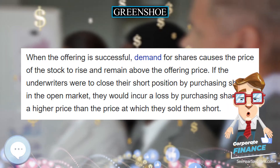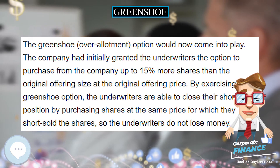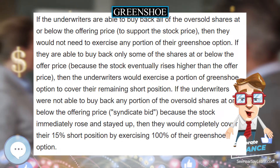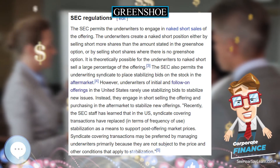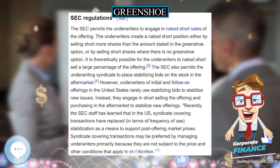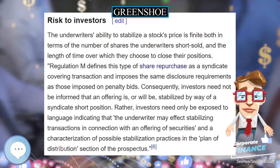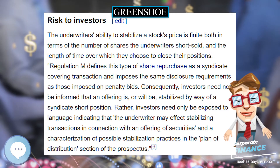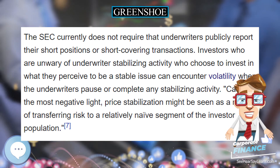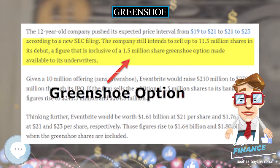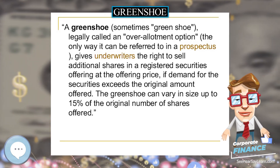The SEC permits underwriters to engage in naked short sales of the offering. The underwriters create a naked short position either by selling short more shares than the amount stated in the green shoe option, or by selling short shares where there is no green shoe option. The SEC also permits the underwriting syndicate to place stabilizing bids on the stock in the aftermarket; however, underwriters of initial and follow-on offerings in the United States rarely use stabilizing bids.